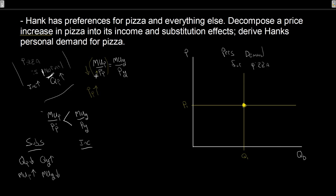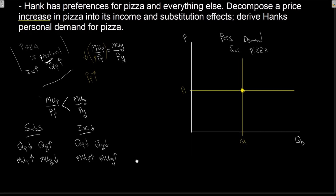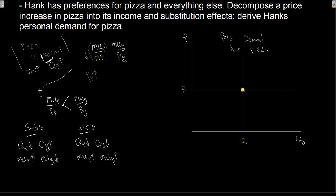From an income perspective, price has gone up, so I feel relatively poor. If I feel relatively poor, I'm going to have less pizza and less of everything else. That means my marginal utility of pizza will be going up and my marginal utility of everything else will be going up. All of this works itself through such that it all re-equates — I'll change my quantities, changing my marginal utilities, and end up with a new equilibrium.